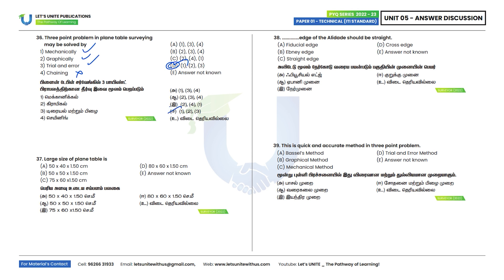Thirty-seventh question: What is the large size of a plane table? The large size is 75 × 60 × 1.5, i.e., 750 × 600 × 150 mm. Option C is the correct answer.